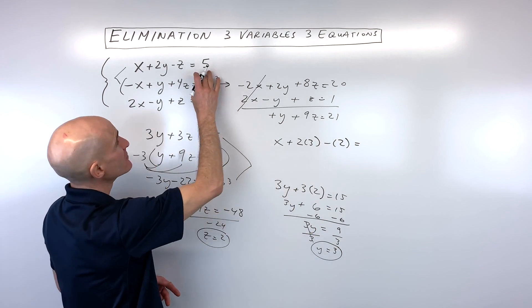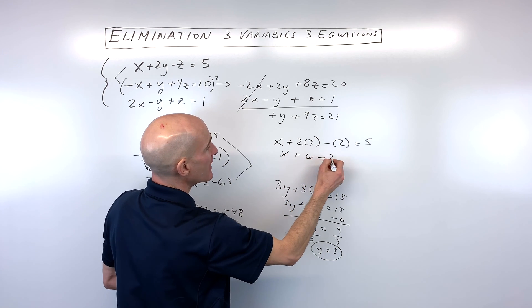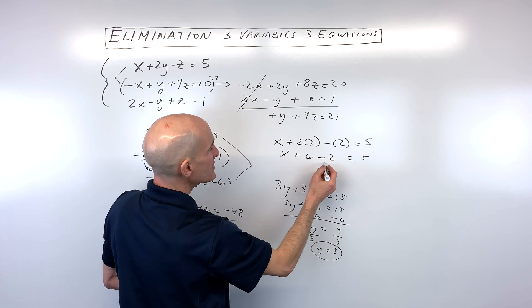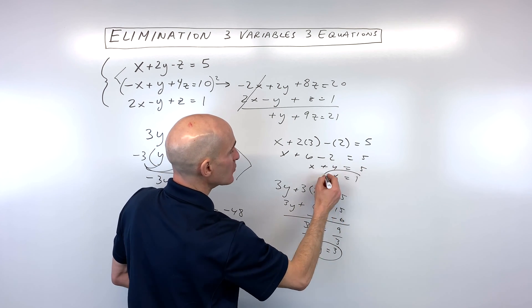and that equals 5. So let's just simplify here. We've got x plus 6 minus 2 equals 5. 6 minus 2 is 4. And if I subtract 4 from both sides, I get x equals 1.